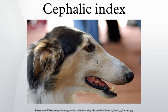List of dolichocephalic felines: Abyssinian, Oriental Bicolor, Oriental Longhair, Oriental Shorthair, Savannah, Siamese, Sphynx, Peterbald, Balinese. List of dolichocephalic lagomorphs: English Spot, English Lop, Belgian Hare.